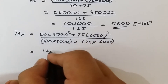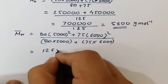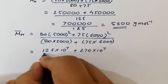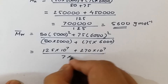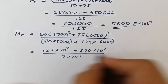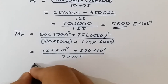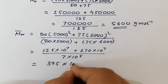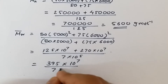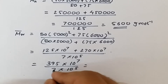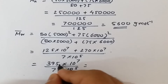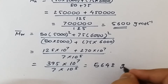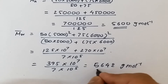Working through the numerator: 125 × 10⁷ + 270 × 10⁷ = 395 × 10⁷. The denominator is 7 × 10⁵. Dividing gives 395/7 × 10², which simplifies to approximately 5642 grams per mole. This is the mass average or weight average molecular weight.